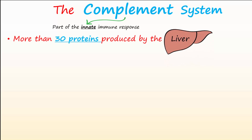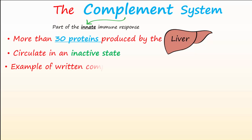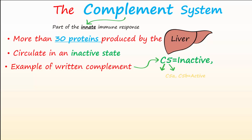The complement system consists of more than 30 proteins produced by the liver, which are then released into the blood and circulate in an inactive state. The different complement proteins are designated by an uppercase C followed by a number. To become activated, they are split into fragments that are named using the lowercase letters A and B.